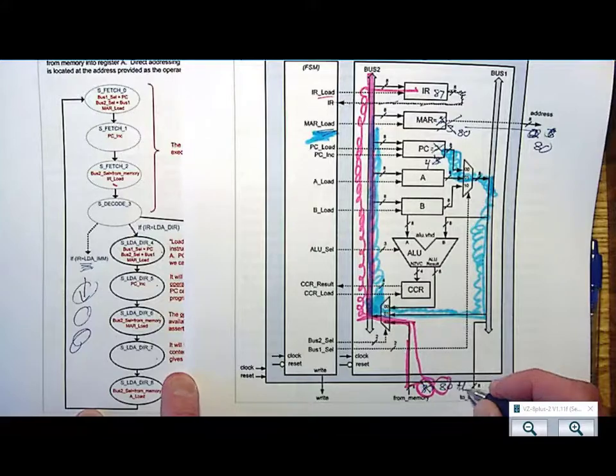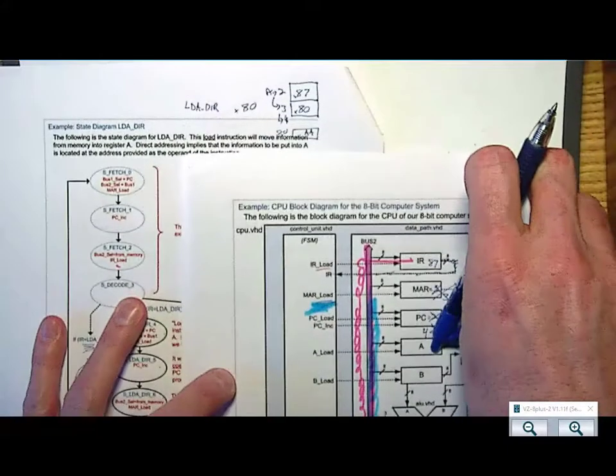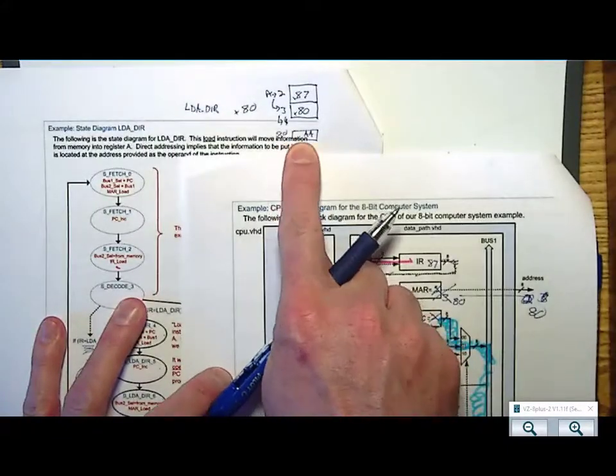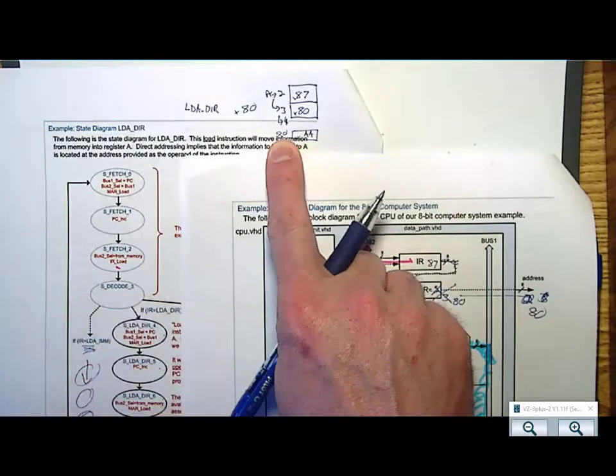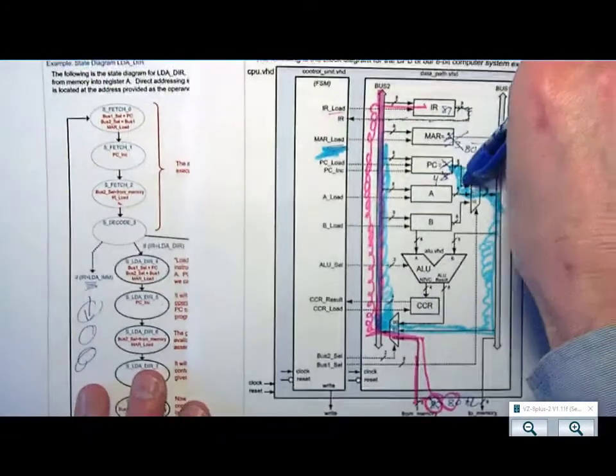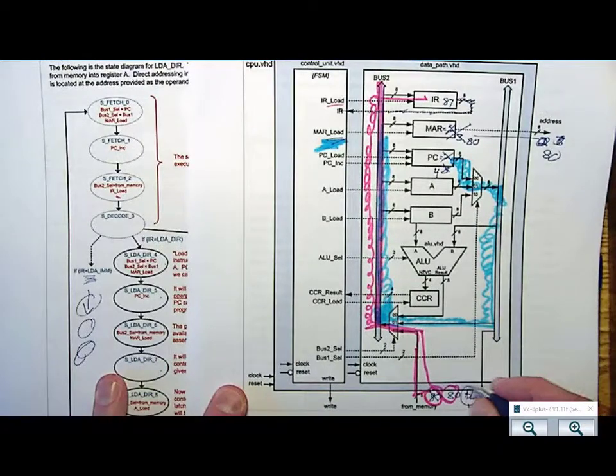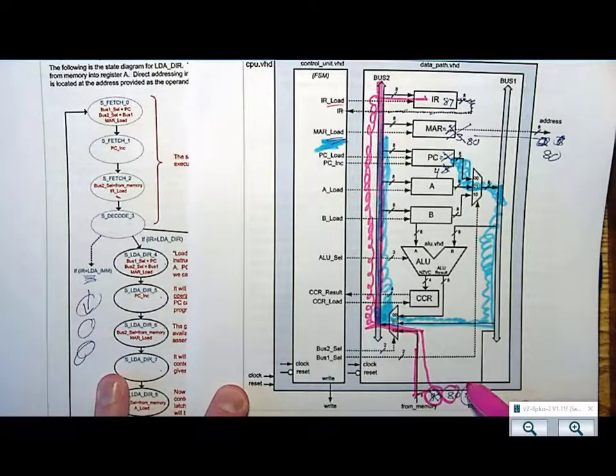It was AA, because that's what we had said that this instruction will do. We had already put this into the read-write memory. We already put AA into 80. So what's going to happen is here comes AA. AA comes over to here. Where is it going to go?